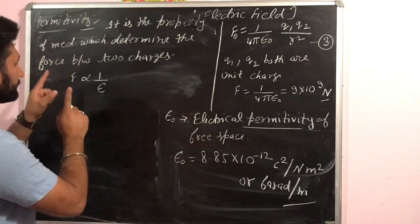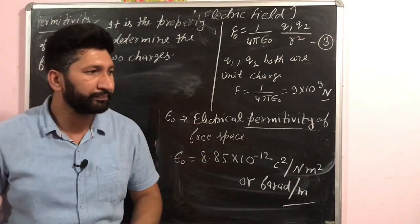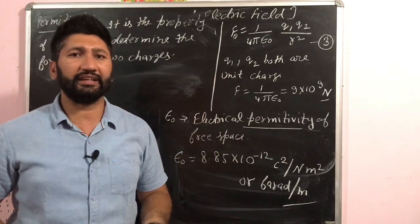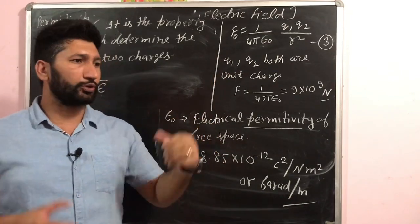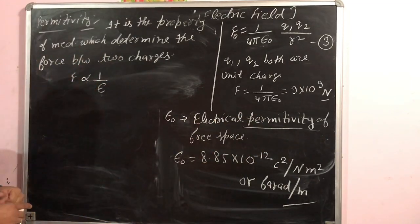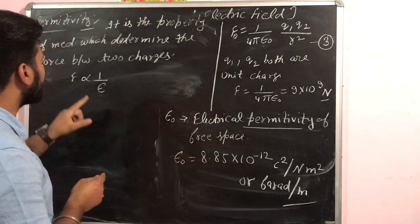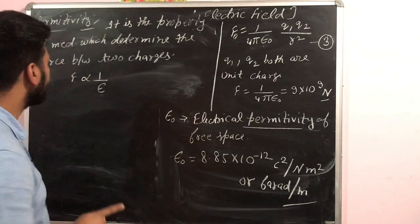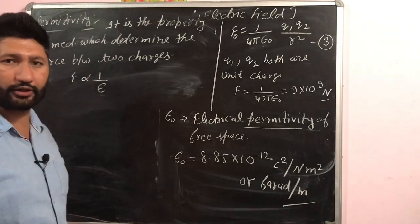For example, if I take two different media — like air and water — the permittivity of water is higher compared to air. So the force between charges placed in water will be less than in air, because force is inversely proportional to permittivity: F ∝ 1/ε.